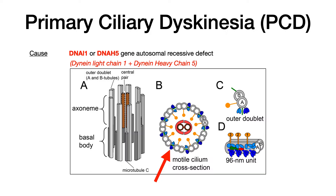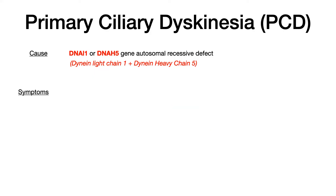As those sections slide against one another, they propel and coordinate motion at the microtubule, which is crucial for proper ciliary and flagella movement. The defect in Primary Ciliary Dyskinesia is that the Dynein light chain 1 and heavy chain 5 products are defective, so the microtubules cannot fine-tune their sliding, resulting in impaired motility of the cilia and flagella.